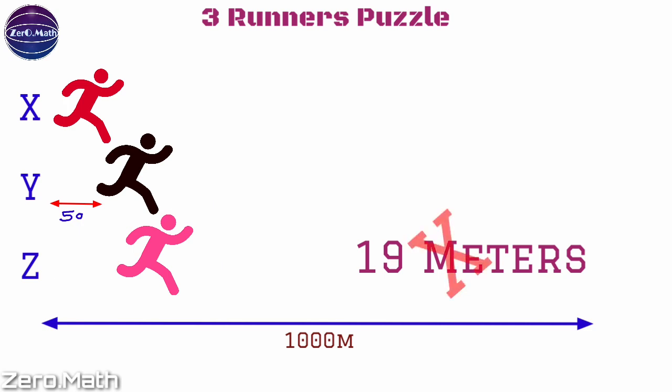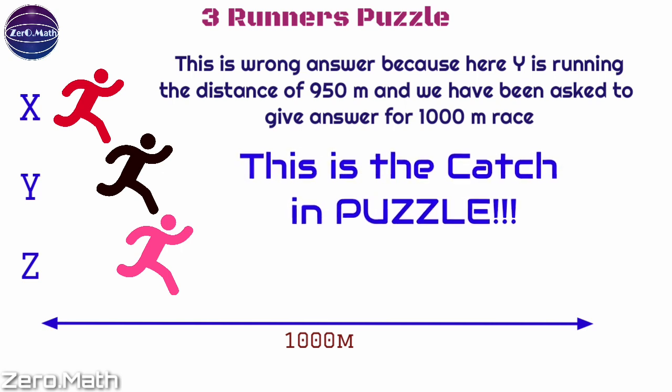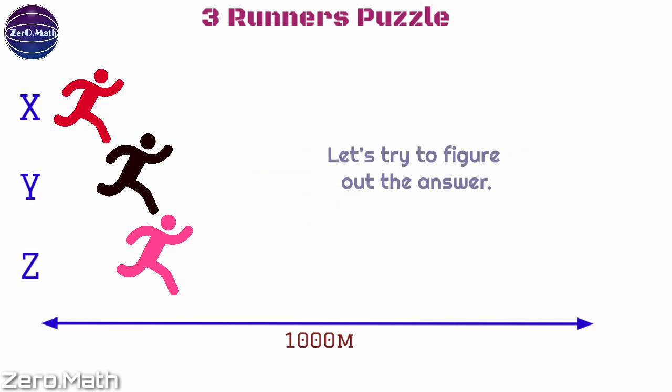This answer is wrong because Y is running the distance of 950 meters, and we have to give the answer for a 1000 meter race. This is the catch.